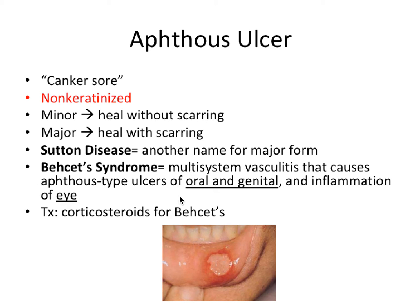There's also Behçet's syndrome, a multi-system vasculitis that causes aphthous-type ulcers of oral and genital areas and inflammation of the eye. For Behçet's, remember a triad of lesions affecting oral, genital, and ocular. Treatment is really only necessary for the most serious form — Behçet's syndrome — using corticosteroids, which are anti-inflammatory and calm down the immune system and the inflammation in hyper or autoimmune responses.